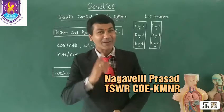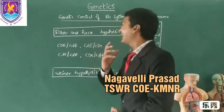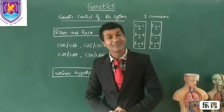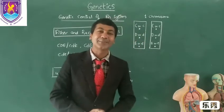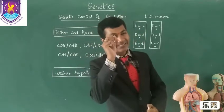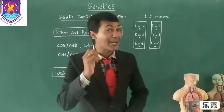Hello everyone, now I am going to explain to you the genetic control of the Rh system. Mind you students, the blood group ABO system is controlled by gene I present on the 9th chromosome.